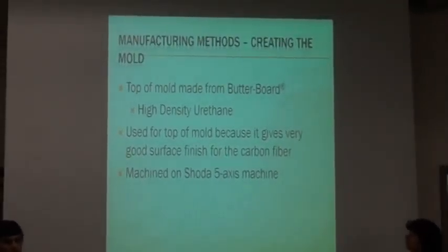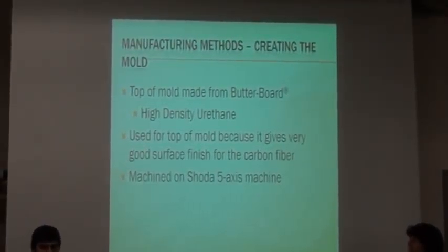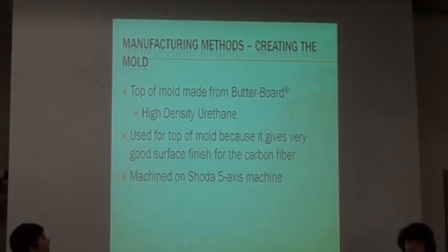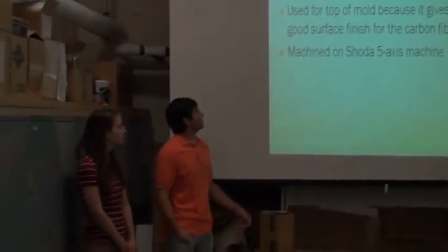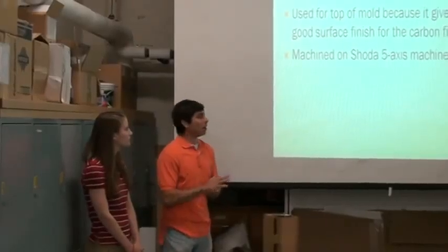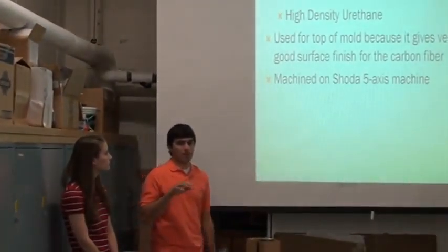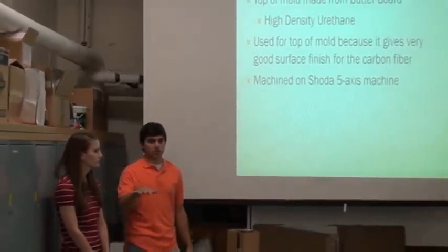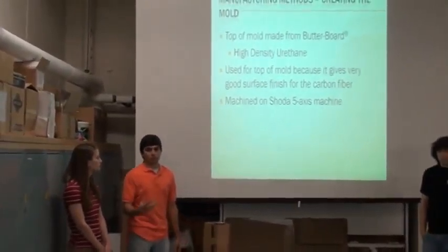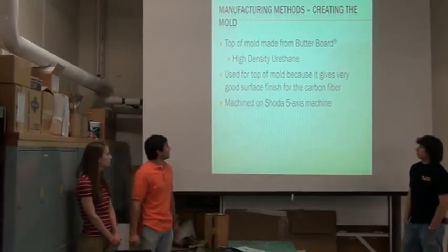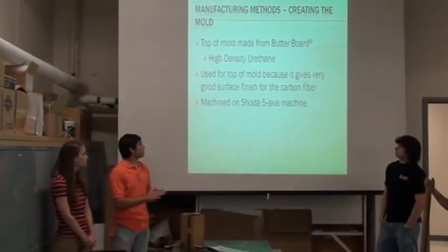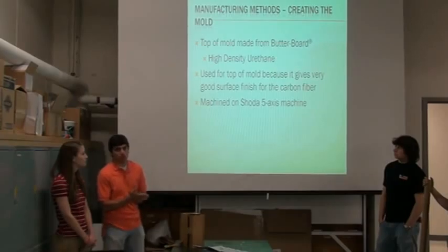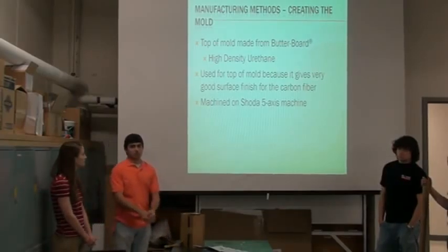So, the first step was to create the mold that we were going to use to actually create the board. The top part of the mold was created from what we call butterboard. It's actually a high density urethane. We ended up choosing this for the top of the mold to give the top of the board a good surface finish. Real smooth. And it will look better. And we machined this part on the 5-axis machine because there's a lot of flexibility with the machine.